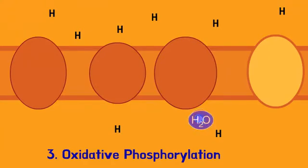We know from what we learned about diffusion that molecules move from high concentrations to low concentrations. So the hydrogen ions move back across the membrane through the protein channel called ATP synthase. This produces ATP.